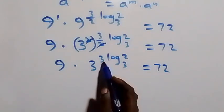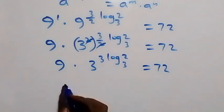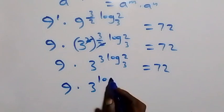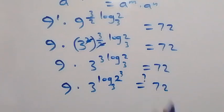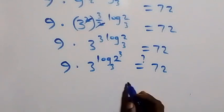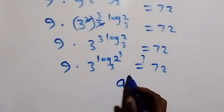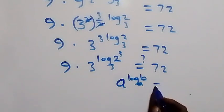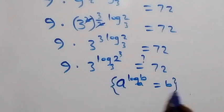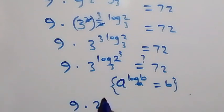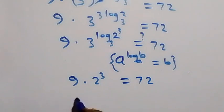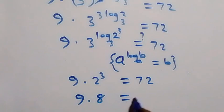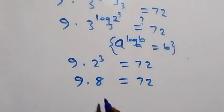Reversing the power law, we have 9 times 3 raised to power log(2 raised to power 3) to base 3 equals 72. Applying the logarithm identity: a raised to power log b to base a equals b. So 3 raised to log(2³) base 3 equals 2³. This gives 9 times 2 raised to power 3, which is 9 times 8, equals 72.